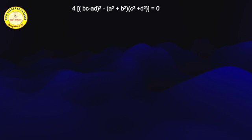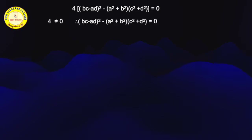If a product of any two terms equals 0, we know that any one of the terms is equal to 0. Here, 4 multiplied by something equals 0. Therefore, we can equate each factor to 0. But we know that 4 ≠ 0. Therefore, (bc - ad)² - (a² + b²)(c² + d²) = 0.